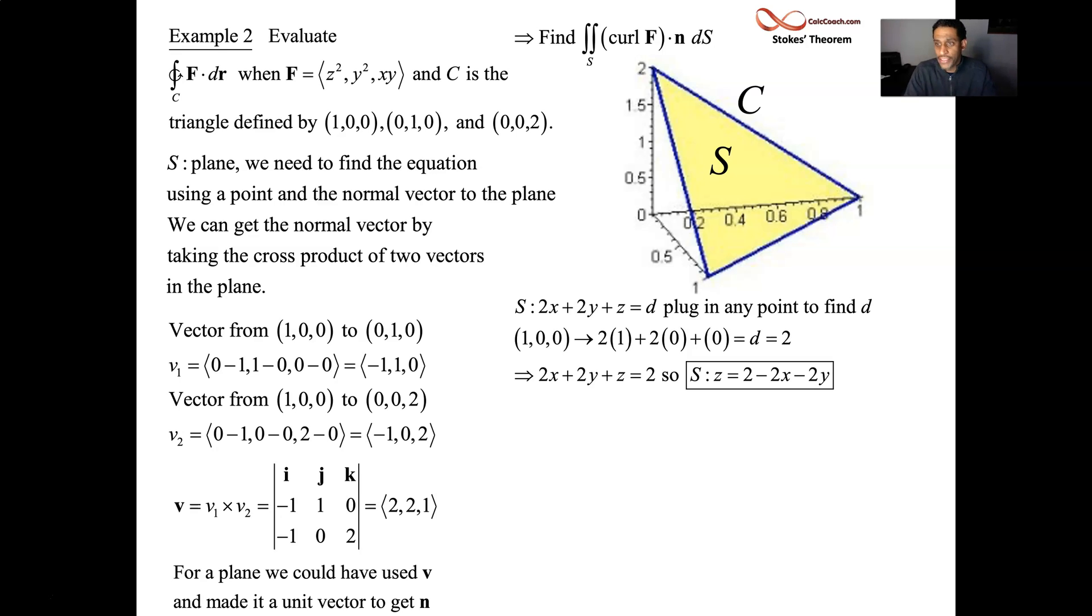When you have the normal vector, you have the coefficients on a, b, and c. The coefficients on x, y, and z, I call them a, b, and c in the equation of a plane. Ax plus by plus cz equals d is what we're going to use. So 2x plus 2y plus 2z equals d, and we can figure out what d is by plugging in any of the three points. Here, I've plugged in the 1 on the x-axis, giving me the fact that d must be 2. So I have in hand the equation of the surface, which is a plane.